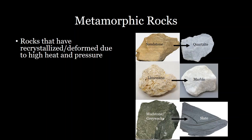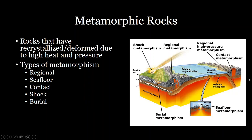The type of metamorphic rock that forms depends on the original material. Sandstone undergoing light metamorphism will turn into quartzite; limestone will turn into marble; and mudstones will turn into slate. There are a number of different processes that can cause enough temperature and pressure to alter the crystal structure of a rock without completely melting it.